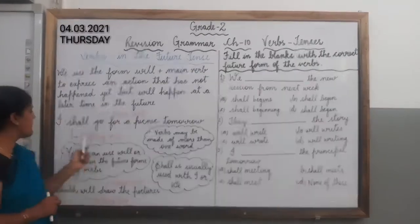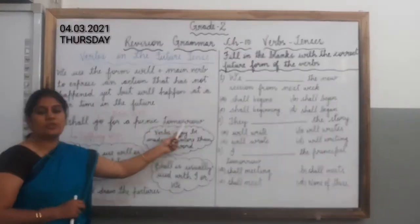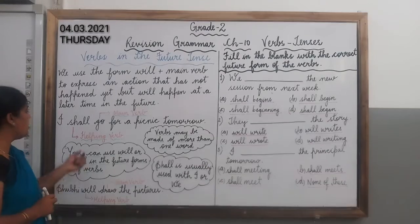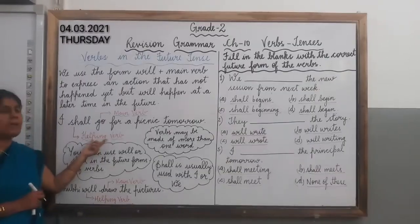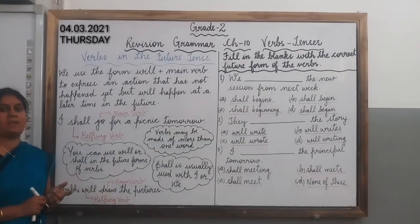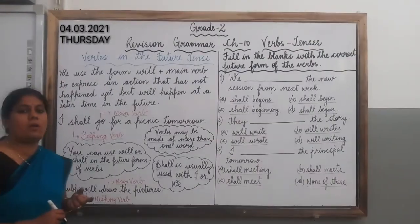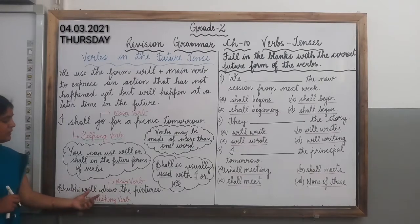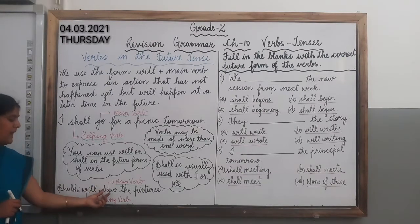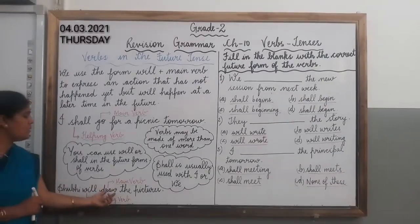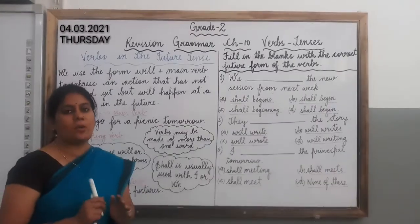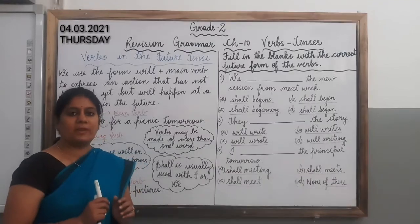For example: 'I shall go for a picnic tomorrow.' Here we have used 'shall' before the main verb. 'Shall' is the helping verb and 'go' is the main verb. Here is one more example: 'Shubhi will draw the pictures.' Here 'will' is used before the main verb 'draw'. 'Will' is the helping verb and 'draw' is the main verb. So remember that in future tense we use 'will' or 'shall' before the main verb.